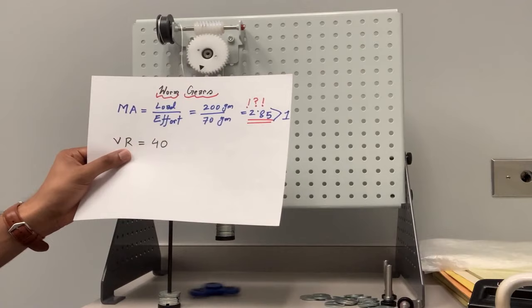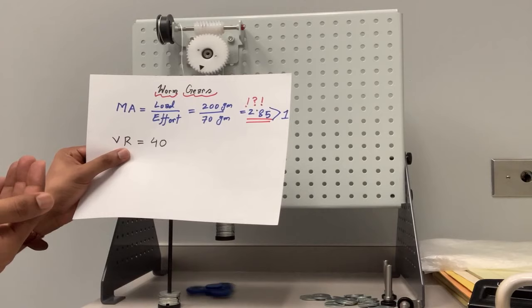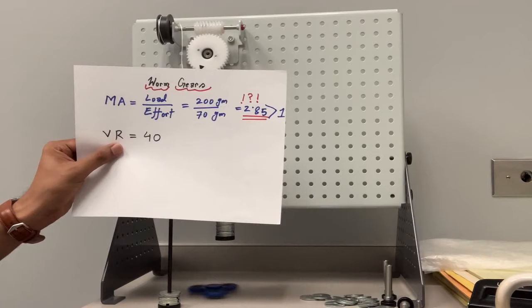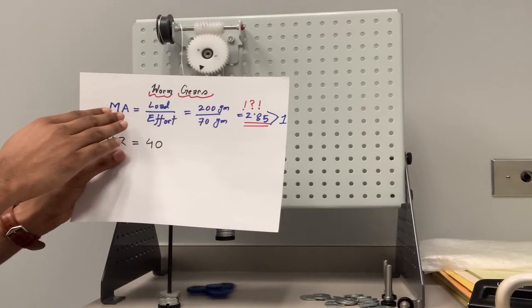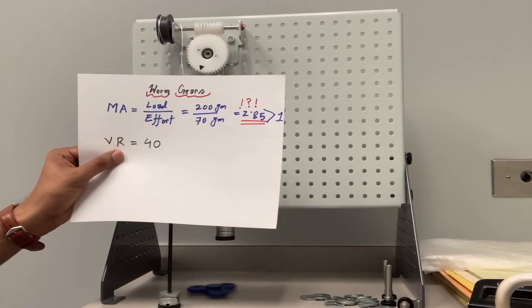Now let's look at our result here. If I use the load 200 grams and effort 70 grams, my mechanical advantage is 2.85, which is greater than one. That means we need lower effort to raise a higher load, that is good. But wait a minute, if you look at our velocity ratio for 40, your mechanical advantage should be way higher than 2.85, normally it could be 10 or 20.